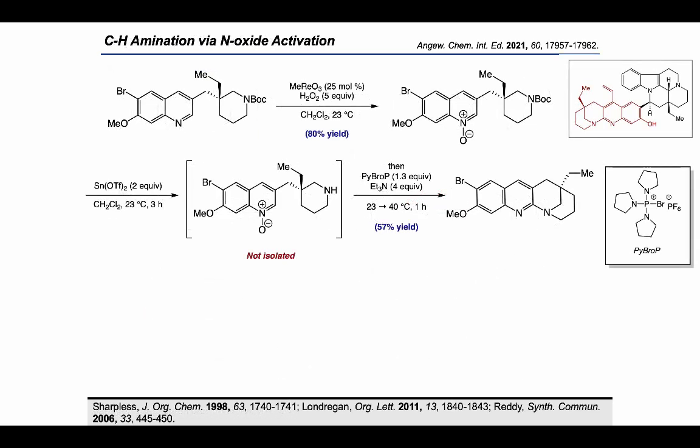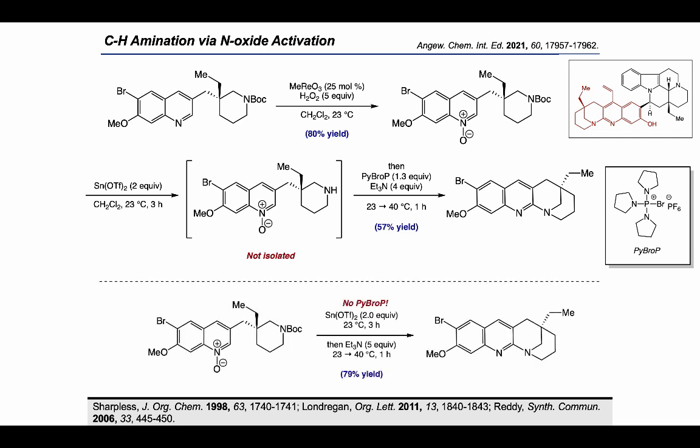We next performed two sequential C–H functionalizations: one at C2 and one at C4 of the quinoline. For selective C2 functionalization, conditions developed by Londregan for N-oxide directed amination worked well. We first oxidized the quinoline to the N-oxide using Sharpless conditions, then removed the Boc group with tin reagent. By adding PyBrOP as an N-oxide activator in the same pot, intramolecular amination provided the C2-aminated quinoline in 57% yield. Interestingly, we observed C2-amination even before PyBrOP was added, suggesting the tin reagent itself serves as an N-oxide activating agent.